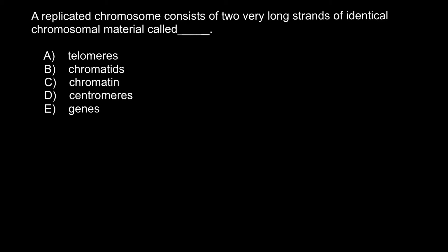Hello and welcome to Nikolai's genetics lessons and the problem of the day. A replicated chromosome consists of two very long strands of identical chromosomal material called, and you have to choose between these five answers.